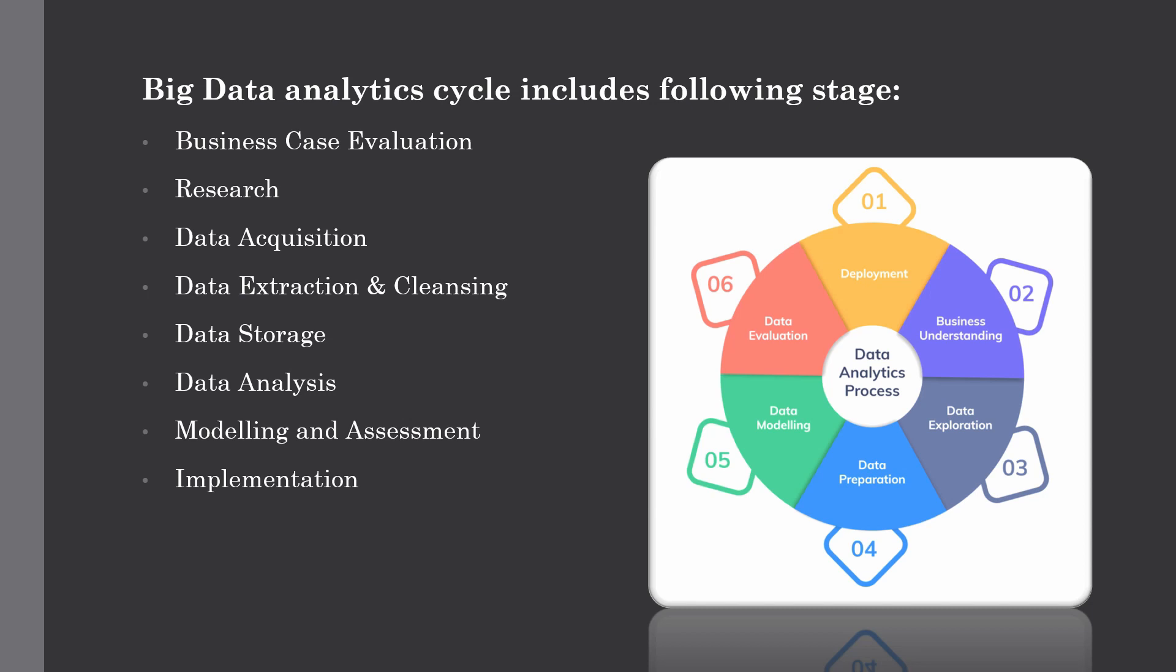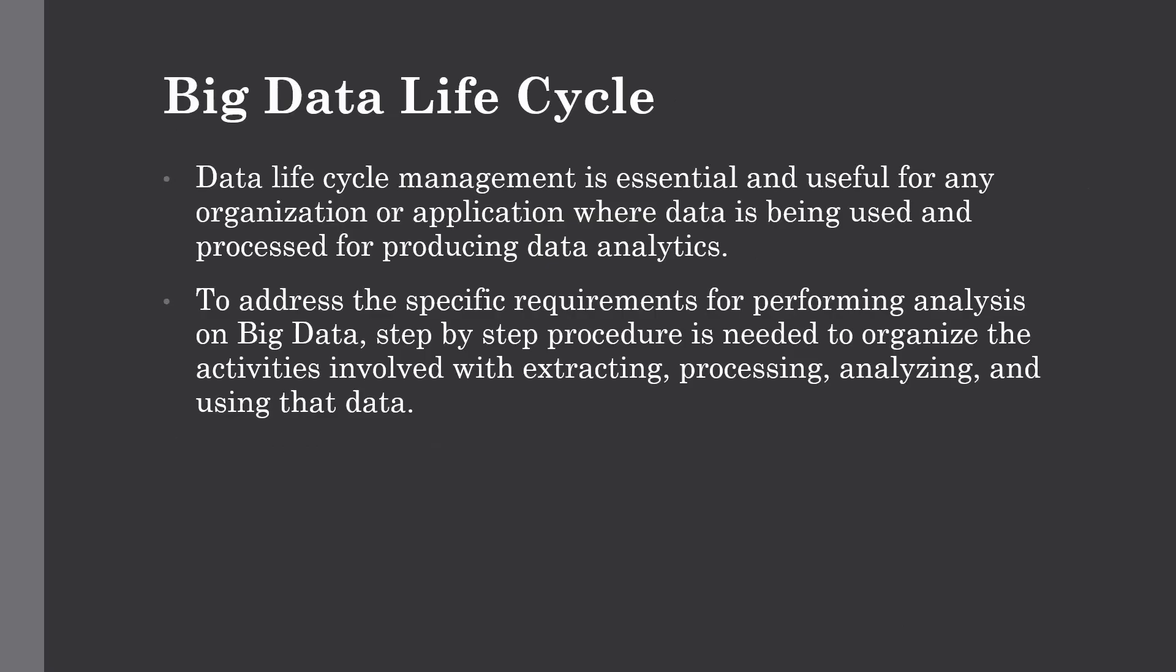And the last stage of big data analytics cycle is implementation. In this stage, as the name suggests, the data product developed is implemented in the data pipeline of the company. This involves setting up a validation scheme while the data product is working in order to track its performance. For example, in case of implementing a predictive model, this stage would involve applying the model to new data, and once the response is available, we will evaluate the model. So this was all about the big data life cycle and the different stages involved in it.